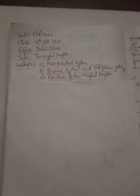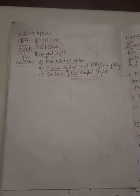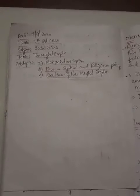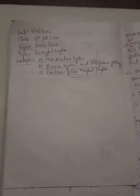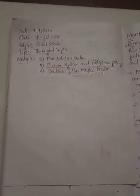Aurangzeb ruled between 1658 to 1707 and he ruled for about 50 years. For meetings he had two administration halls: Diwan-i-Khas and Diwan-i-Aam. For central administration he divided several departments and appointed Wazir, Mir Bakshi, Mir Saman, and Sadr-i-Jahan.